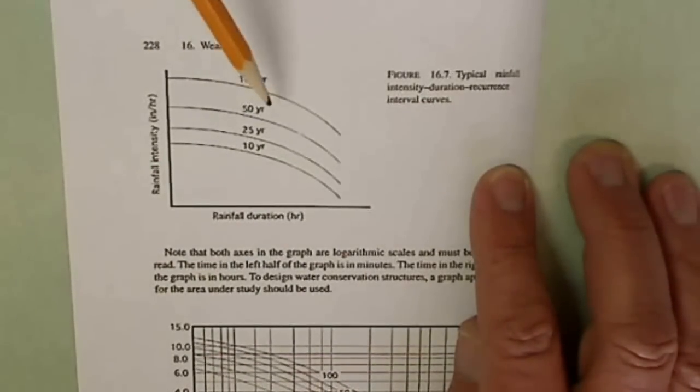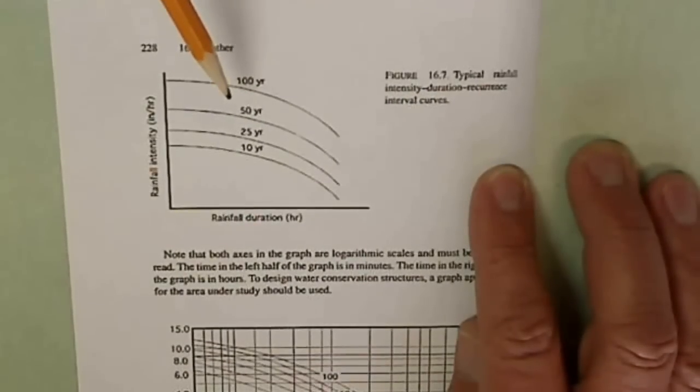Now it's real important as we start talking about these expected probabilities that you realize we could have a 100-year storm tomorrow and then we could have a 100-year storm again next week. And that could continue for an indefinite period of time. Of course, as that continued, they'd change that duration of the 100-year storm and become much different.